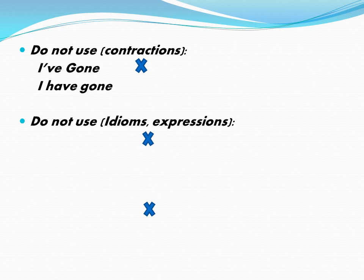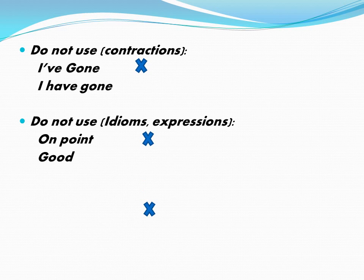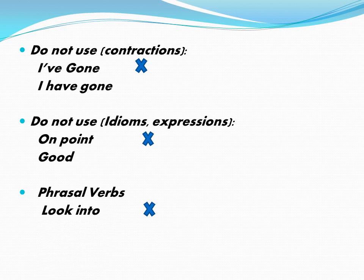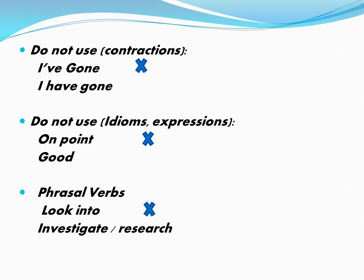We also don't use idioms or expressions in formal letters. For example, idioms like 'play with fire' or 'on point,' which means good — we should not use these kinds of expressions. Similarly, we don't use phrasal verbs. A phrasal verb is a verb plus a preposition; for example, 'look into' — instead, we write 'investigate' or 'discover,' not 'find out' or 'look into.'